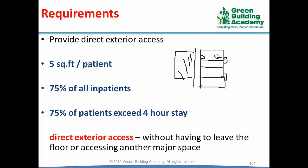When you have this number, you have to provide space equal to 5 square feet per patient. This direct exterior space should be within close proximity to patients, visitors, and staff. The patient or staff should not have to go through a major space to reach it — it should be immediately available. That is the requirement for the direct exterior space.